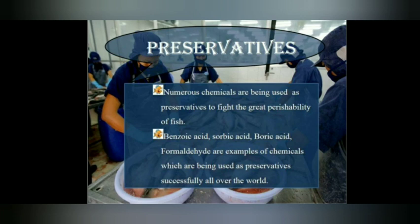Chemical preservatives are used in fish and food processing industries. Common ones include benzoic acid, sorbic acid, boric acid, and formaldehydes, which can be used as preservatives successfully worldwide.